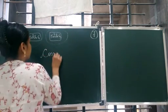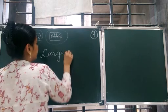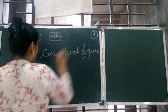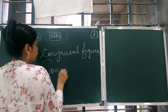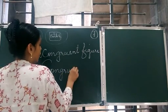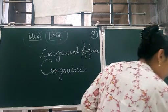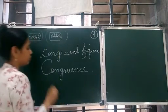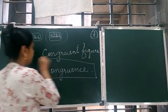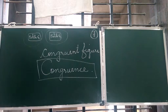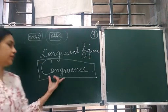They are known as congruent figures, and the property is known as congruency — which is our new chapter today. Congruency of triangles. This is chapter number 7, Congruency.